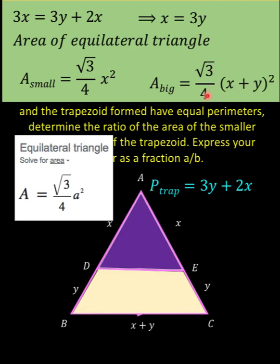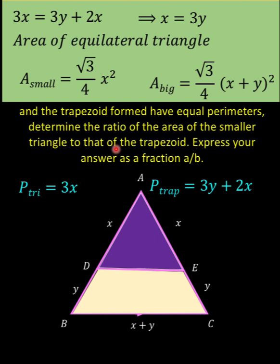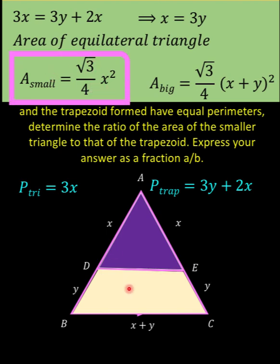For the area of the bigger equilateral triangle, we have (√3 / 4) again, but the side length is X plus Y, so we square X plus Y. We want the ratio of the small equilateral triangle's area to the trapezoid's area. We can find the trapezoid's area by subtracting the small triangle's area from the big triangle's area.